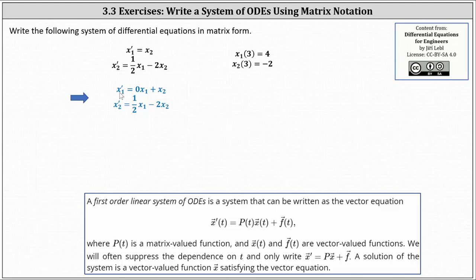To begin, we write the left side as a two-by-one matrix representing the vector-valued function, where the components are x one prime and x two prime, equals on the right, we need p of t, which is the matrix-valued function, times the components of the vector-valued function x of t.